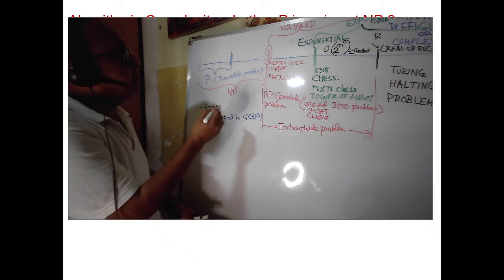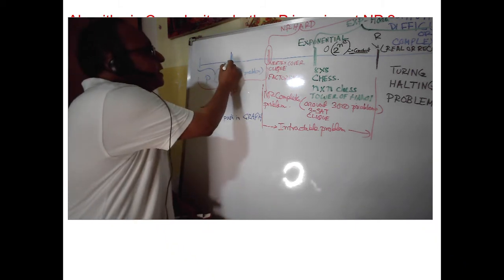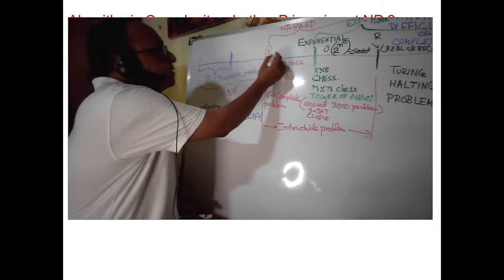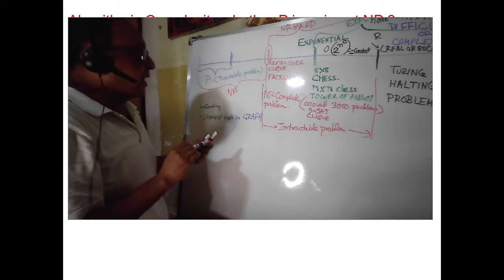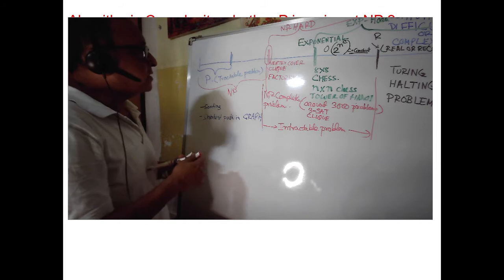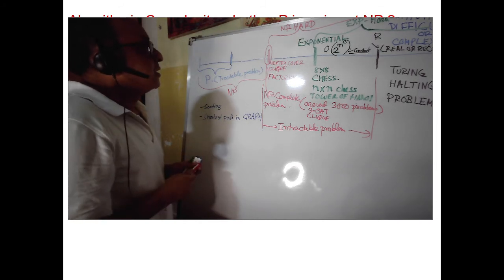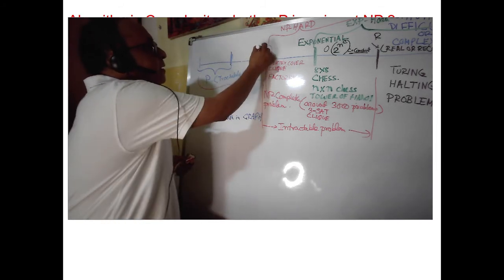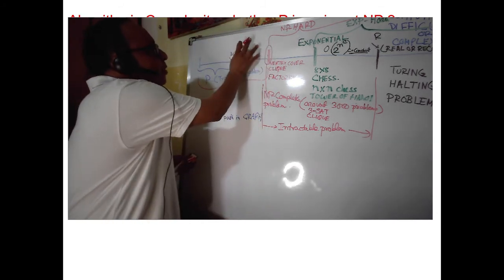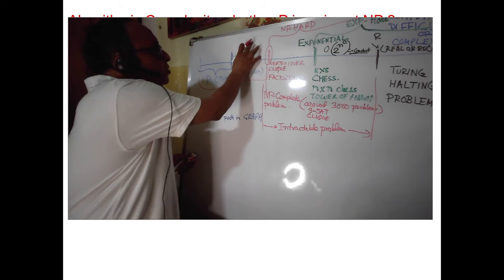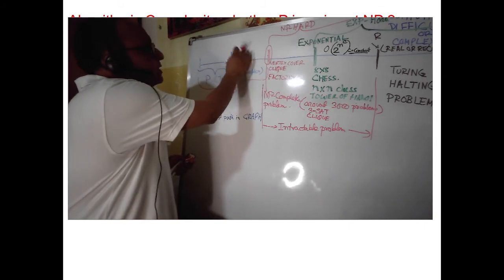After P comes another stage called NP. These are the areas of problems where we are not sure whether it is P or whether it is NP.